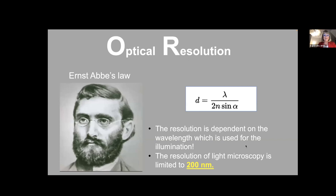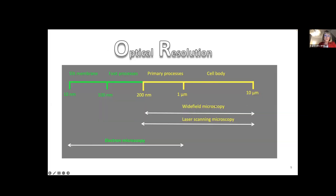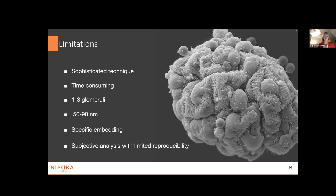The reason you cannot see these tiny foot processes with a normal light microscope is due to the Ernst Abbe limit, which determines the resolution of a light microscope at around 200 nanometers — the distance to resolve two independent points is dependent on the wavelength. Therefore, the foot processes and the slit membrane are only visible by electron microscopy. However, EM is a sophisticated and highly time-consuming technique — you have only one to three glomeruli at a thickness of 50 to 90 nanometers with specific fixation and embedding, and the analysis is mainly subjective with limited reproducibility.